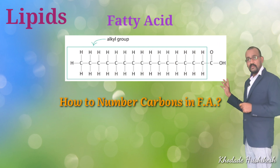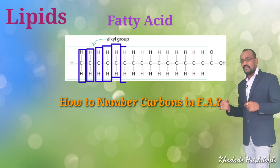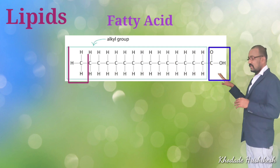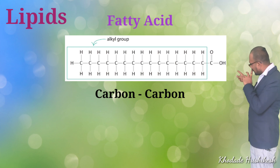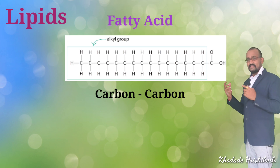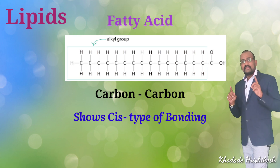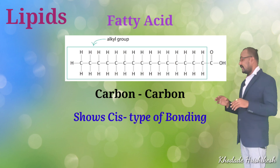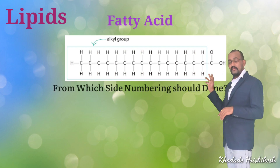How can we number each carbon in a fatty acid? A fatty acid is simply a chain of carbon and hydrogen, with a carboxylic group at one end and a methyl group at the other. Each carbon is attached to the next by single bonds, which can freely rotate around each other. The bonding between carbon atoms in a fatty acid chain is always in cis conformation — in chemistry there are two conformations, cis and trans, but fatty acids are always in cis conformation.